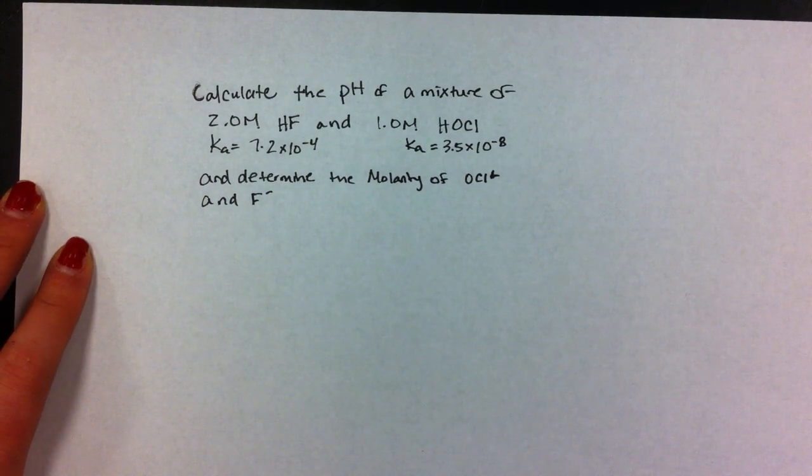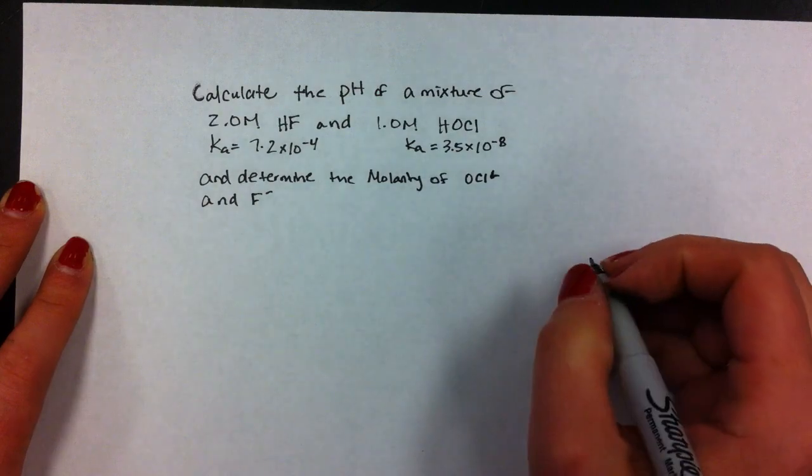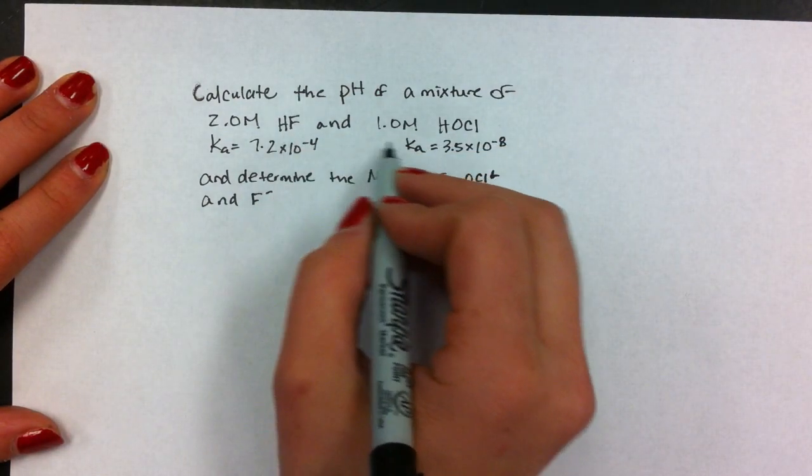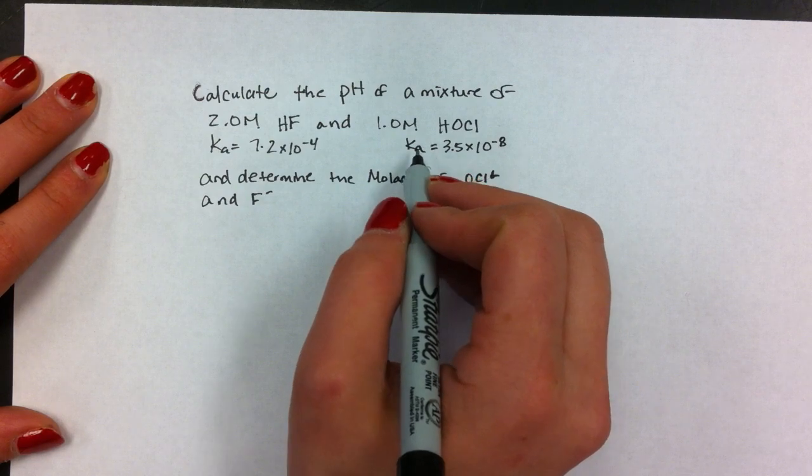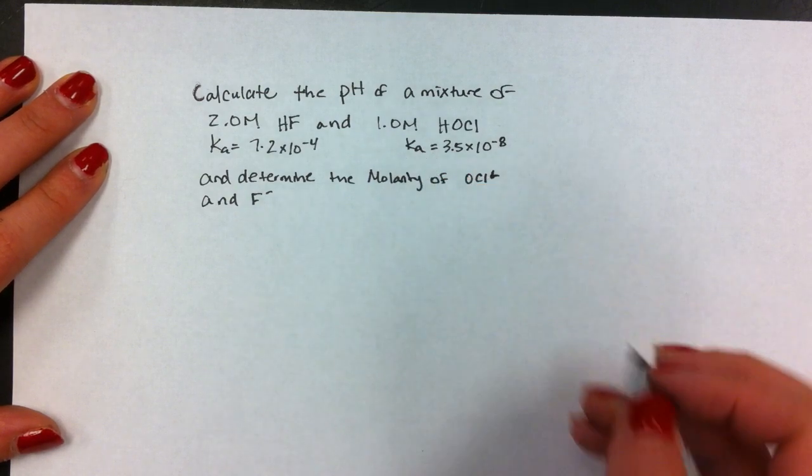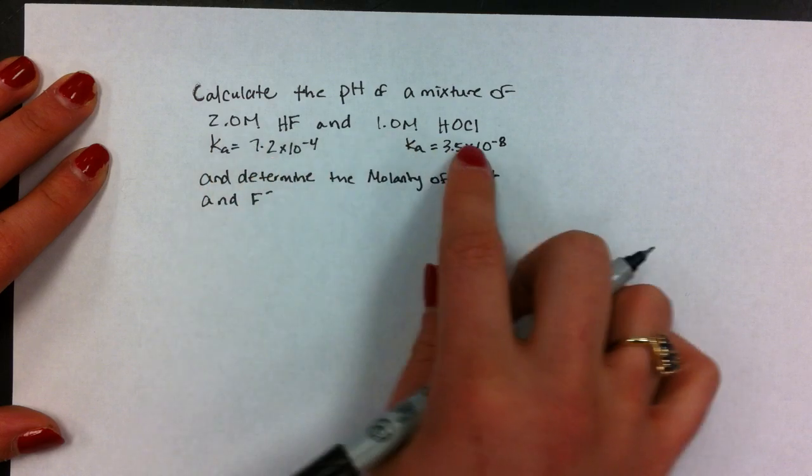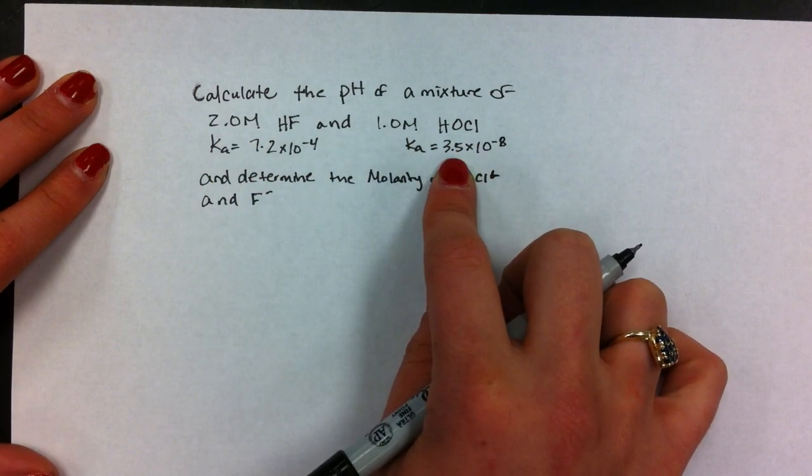This is to show you how to determine the pH of a mixture. We have a mixture of hydrofluoric acid and hypochlorous acid: two molar hydrogen fluoride and one molar hypochlorous.